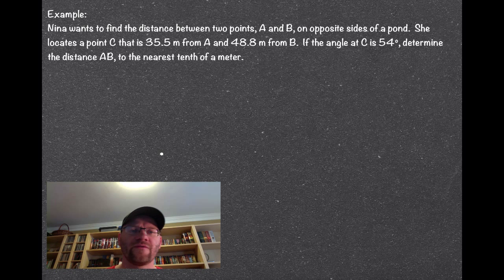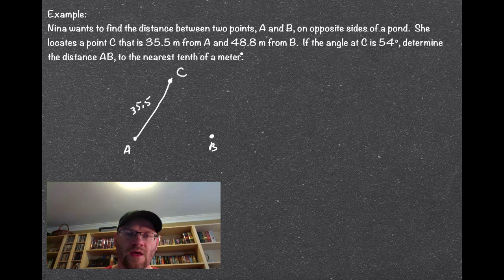So here's our example, it says Nina wants to find the distance between two points A and B on opposite sides of a pond, so we've got a point here A, and a point here B. She locates a point C that's 35.5 meters away from A, so she has a different point here, point C. It happens to be 35.5 meters away from A, and 48.8 meters away from B. If the angle C is 54 degrees, so this angle right here is 54 degrees, determine the distance AB, so the distance from A to B, to the nearest tenth of a meter.